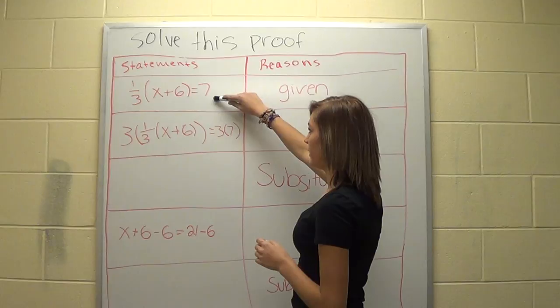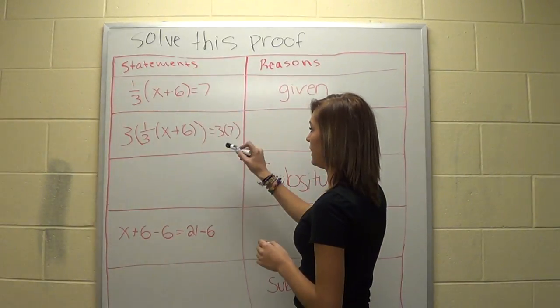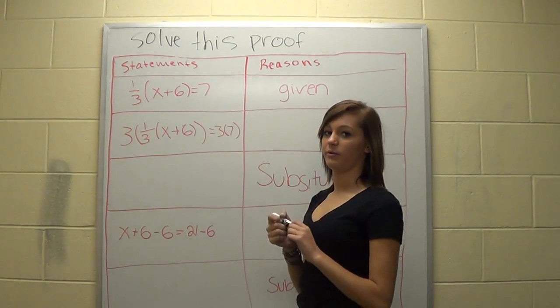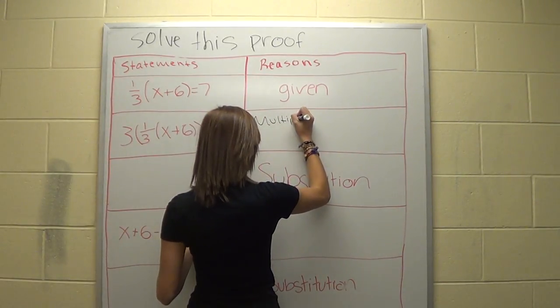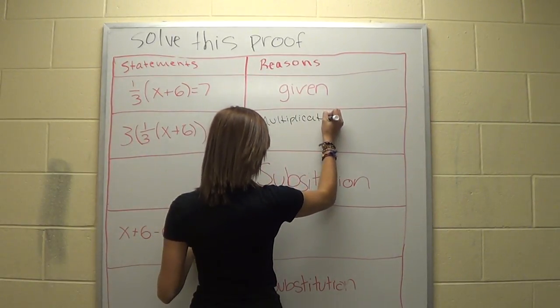And then, what's different between this statement and this statement is that we're multiplying each side by 3. So then we write that it's a multiplication property, because we're multiplying.